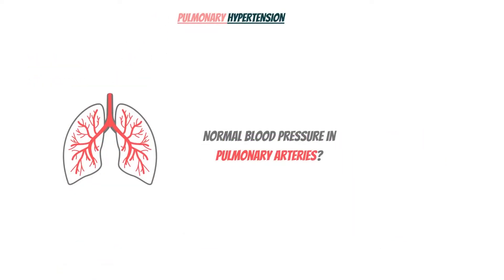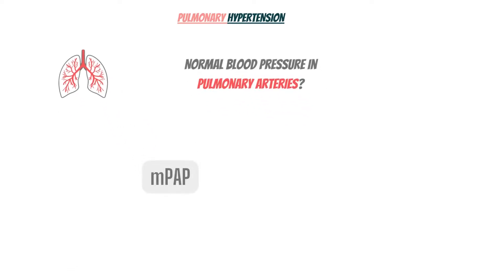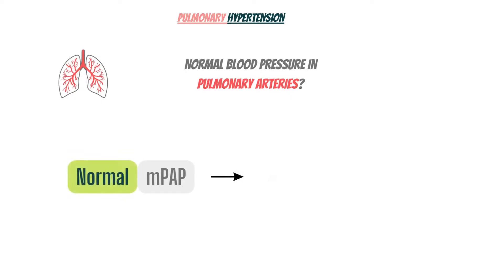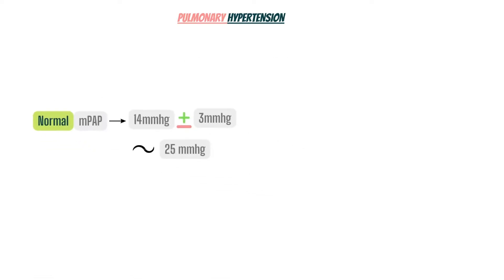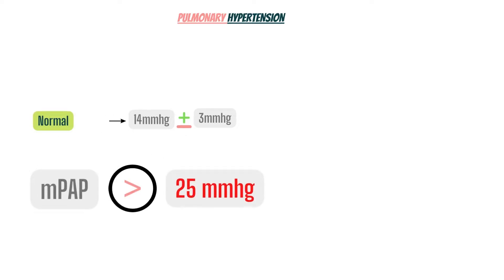So, what is the normal blood pressure in pulmonary arteries? MPAP, or mean pulmonary arterial pressure — normal mean pulmonary artery pressure is 14 plus or minus 3 mmHg, with an upper limit of 20 mmHg while resting or not performing any vigorous activities, but it can go up to 25 mmHg and it's still normal. But if the MPAP exceeds this range and goes above 25 mmHg, it is called pulmonary hypertension.